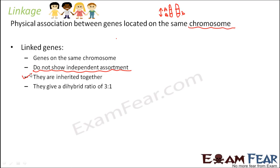In case of linked genes, it has been seen that a dihybrid cross produces a ratio of 3:1. So if a dihybrid cross is performed for linked genes, the ratio obtained is 3:1. Let us try to see how exactly this happens.